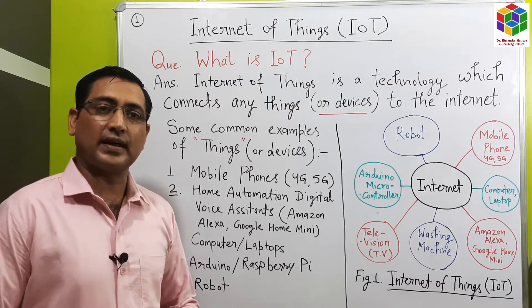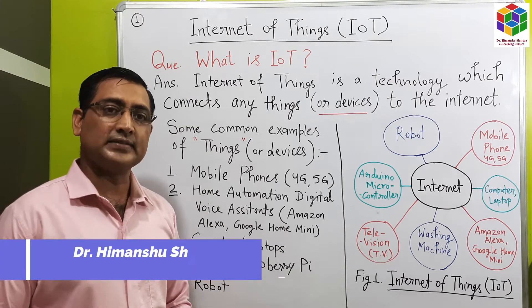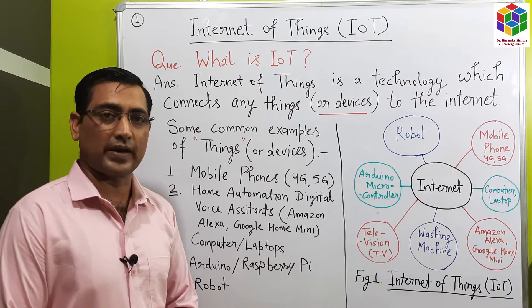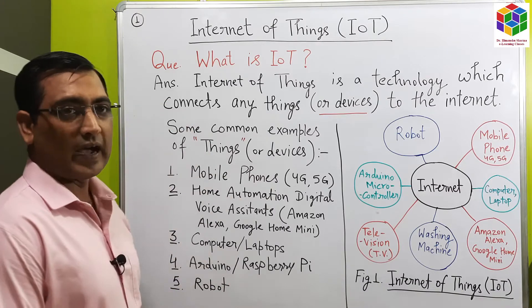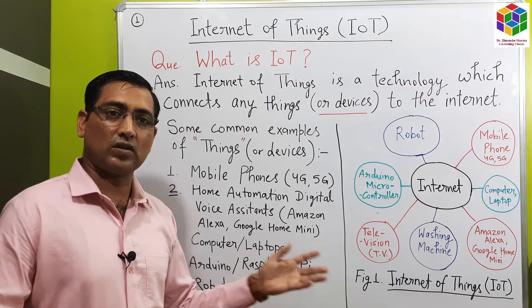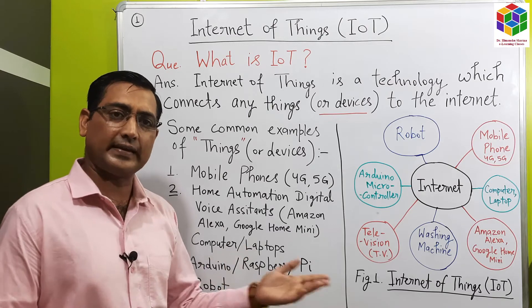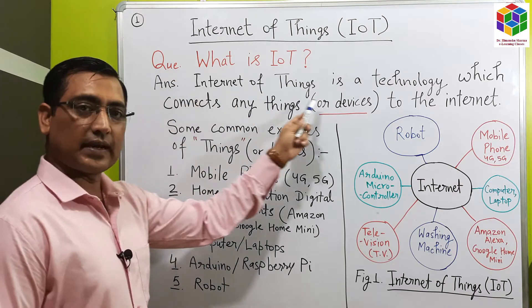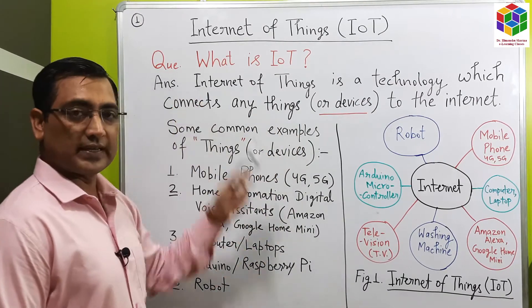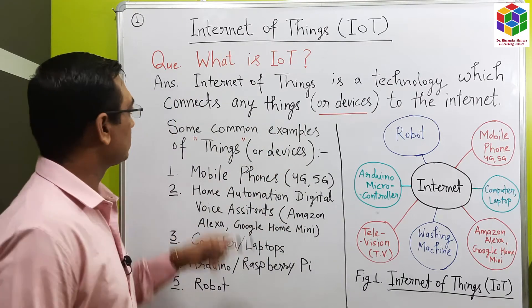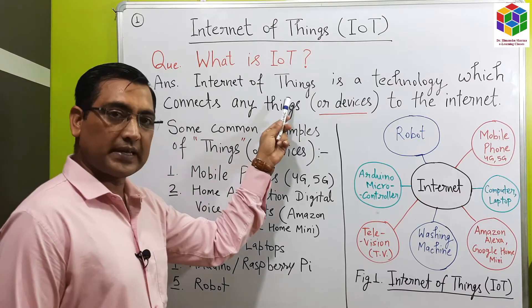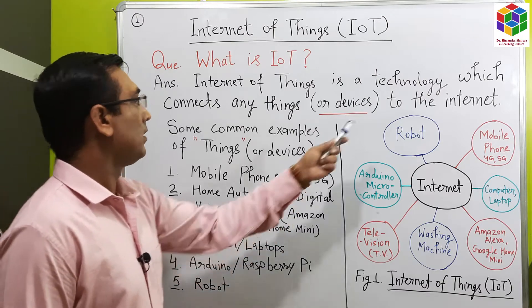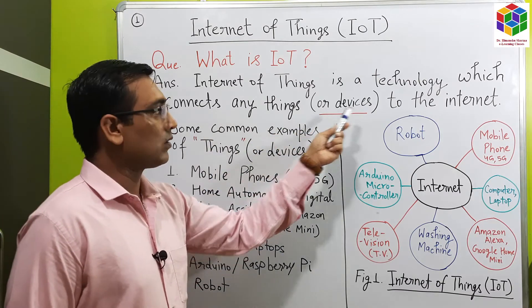The first question that arises in the mind of any person is: what is IoT? A lot of people have a lot of confusion about IoT. Today, I will clear all the doubts and confusion about IoT in very simple and easy words. In one single statement, the definition is: Internet of Things is a technology which connects anything to the Internet.